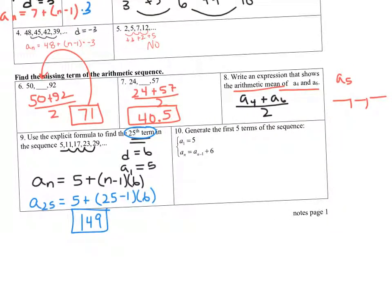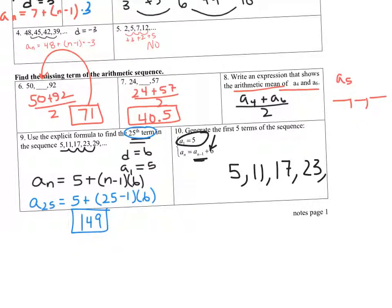Problem 10: Generate the first five terms. We know a sub 1 is 5, and to get the next term you take the previous term and add 6. So: 5, then add 6 to get 11, add 6 to get 17, add 6 to get 23, add 6 to get 29. Those are the first five terms of the sequence.